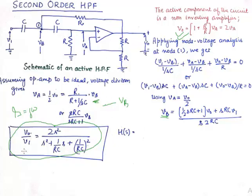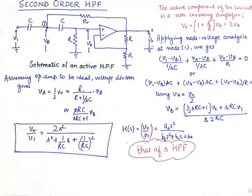V0 upon V1 is what we strive to find out because this is what is known as the transfer function. The transfer function is by the way the ratio of output voltage to the input voltage in this particular case we denote it as H of S. Our H of S which is the transfer function, V0 upon V1 comes out to be in this shape.